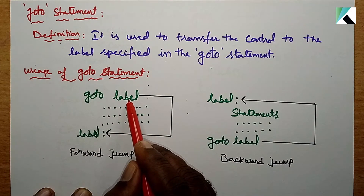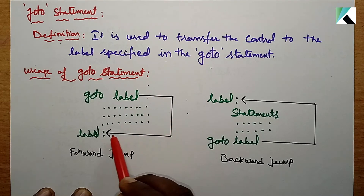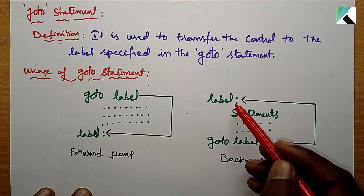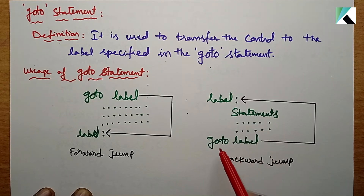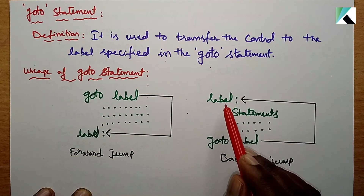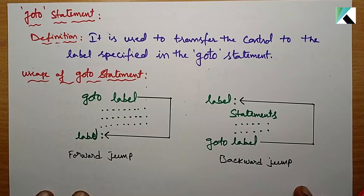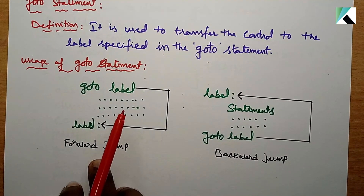There are two types: forward jump and backward jump. In a forward jump, the goto label skips all the statements in between and control goes directly to the label. In a backward jump, control goes back to a previous label and the statements there get executed again.